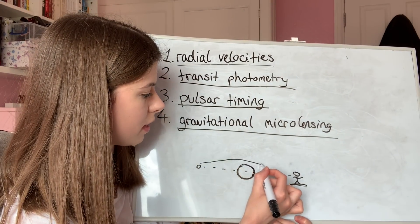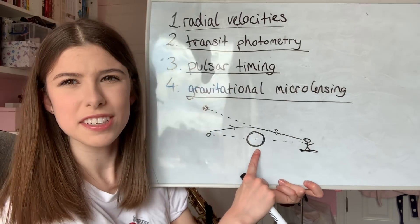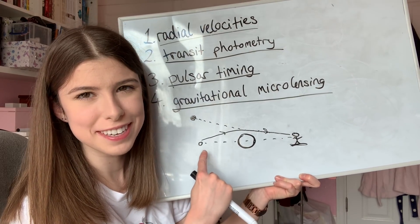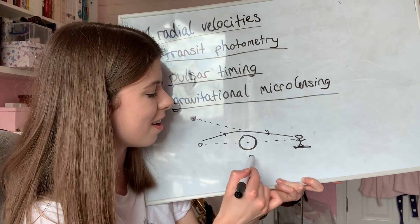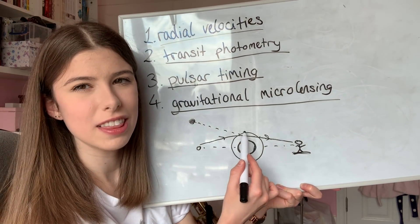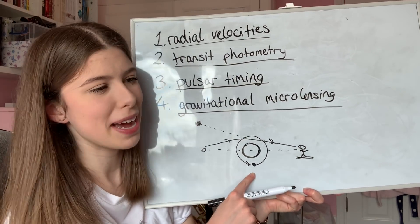The light emitted from this background star can be bent by the gravitational field of this foreground star. This foreground star acts as a lens and it magnifies this light from the background star. If the foreground star has an exoplanet orbiting it, this significantly affects the light curve that we receive, and we can detect the presence of a planet.